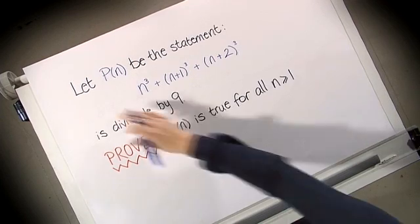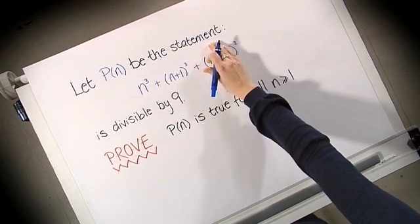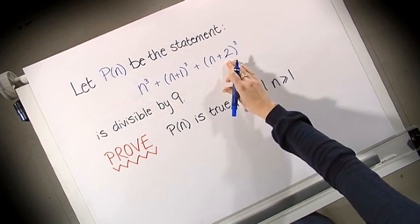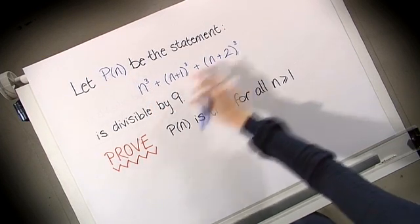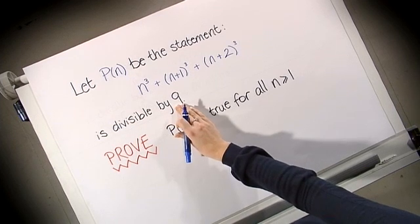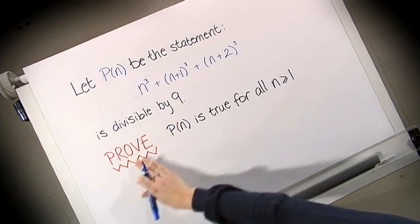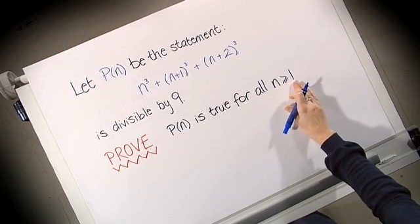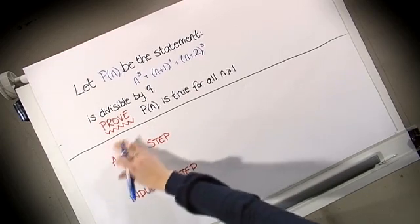So now let P(n) be the statement n cubed plus (n+1) cubed plus (n+2) cubed is divisible by 9. We want to prove that P(n) is true for all n greater or equal to 1. So for our method of induction, we always begin with our anchor step. The anchor step is where we take some arbitrary case for n. Let us begin with n equals 1.